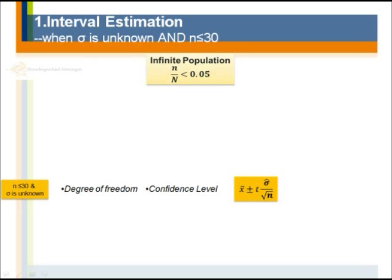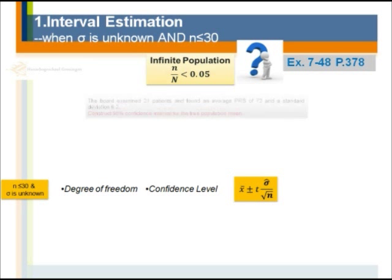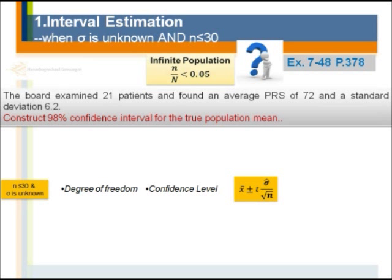Now let's look at when we don't know the population standard deviation and the sample size is smaller than or equal to 30. Question 7.48 on page 378: A board examined 21 patients and found an average PRS of 72 with a standard deviation of 6.2. We want to construct a 98% confidence interval for the true population mean. Here 6.2 is the sample standard deviation from only 21 patients — the sample size is smaller than 30 — so we need to use the t-value rather than the z-value.